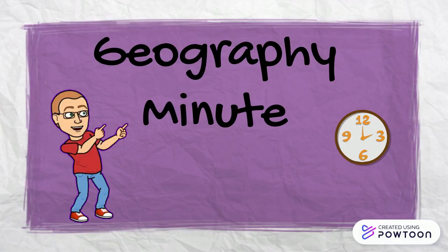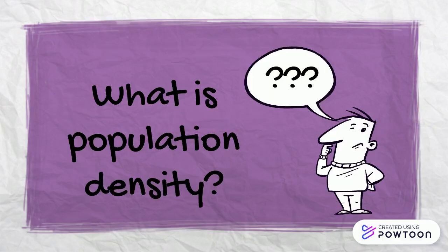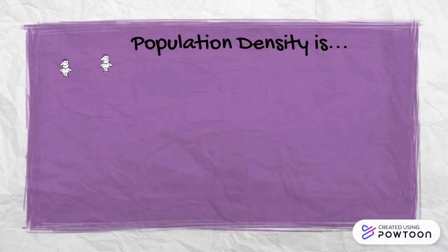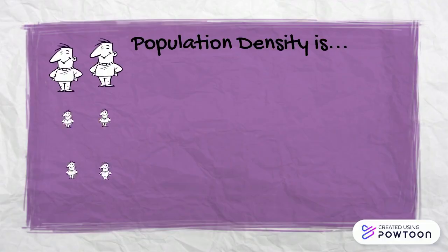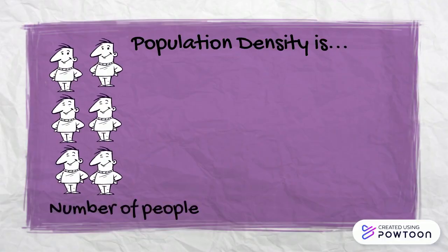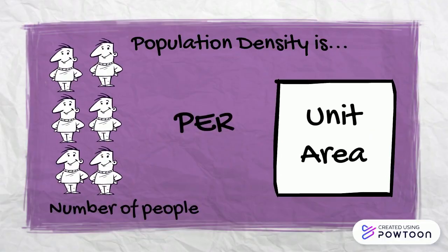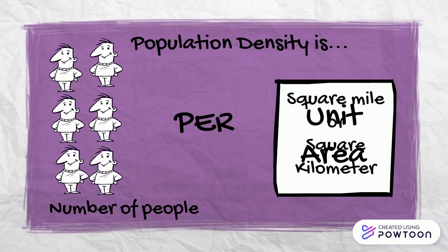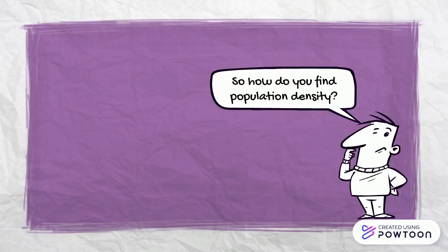Today's Geography Minute. What is population density? Population density is the measure of the number of people per unit area, which means it measures the number of people per square mile or square kilometer.